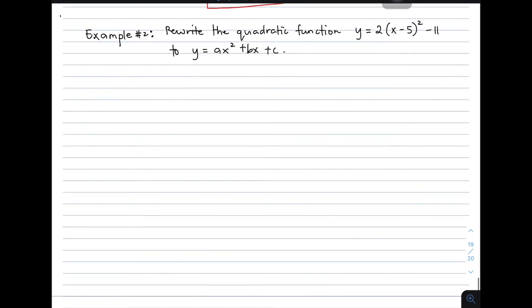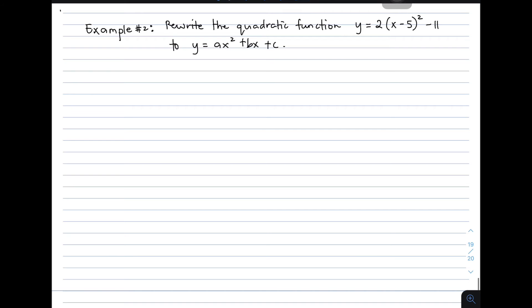Let's move on with example number 2. In example number 2, we have to write the quadratic equation y equals 2 times the quantity of x minus 5 squared minus 11. Let's copy our given.